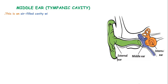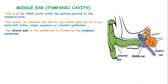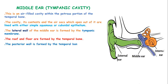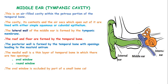The middle ear, or tympanic cavity, is an air-filled cavity within the petrous portion of the temporal bone. The cavity, its contents, and the air sacs which open out of it are lined with flattened squamous epithelium or cuboidal epithelium. The lateral wall of the middle ear is formed by the tympanic membrane, therefore known as the tympanic wall. The roof and floor are formed by the temporal bones, and the posterior wall is formed by the temporal bone with openings leading to the mastoid antrum. The medial wall is a thin layer of temporal bone in which there are two openings: the oval window and the round window. The oval window is occluded by a part of the small bone known as the stapes, and the round window by a fine sheet of fibrous tissue.